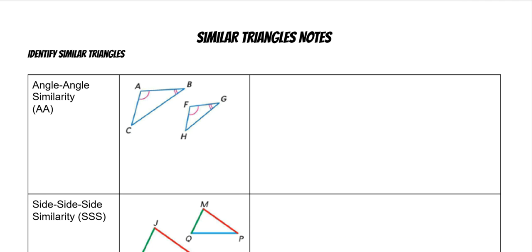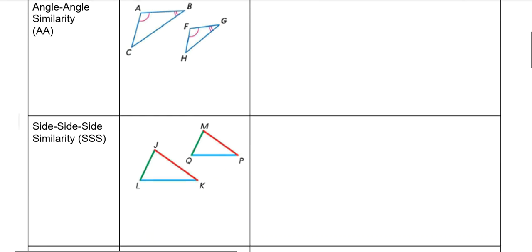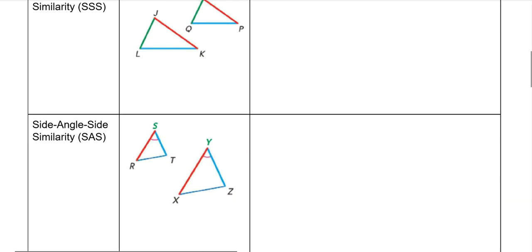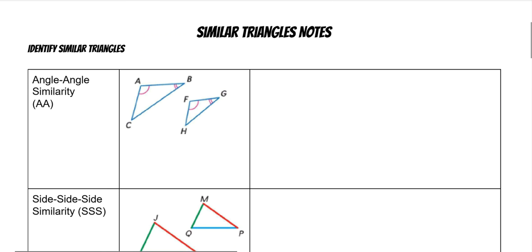Today we're going to go over similar triangles, which will look very similar to when we went over congruent triangles. We are using side-side-side again and side-angle-side, but now for similarity. When we did similar polygons, we found that the angles are congruent but the sides are proportional, which will be a little different when talking about similar triangles.